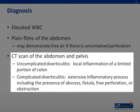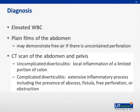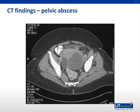Uncomplicated cases involve only local inflammation of the colon, usually the sigmoid colon. Cases of complicated diverticulitis involve more extensive inflammatory processes and are associated with an adjacent abscess, fistulization, free perforation, or bowel obstruction. This image from a CT scan demonstrates a large pelvic abscess from a case of complicated diverticulitis. Usually, this type of abscess will be treated with CT-guided percutaneous drainage.